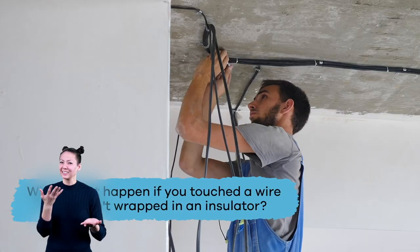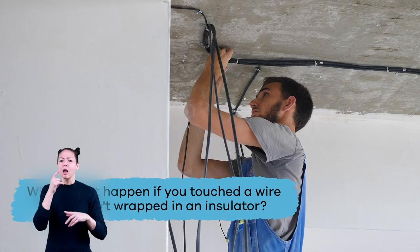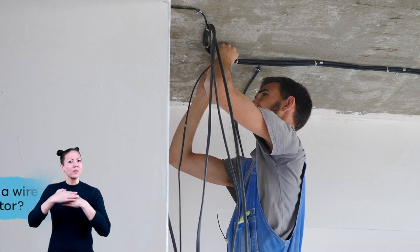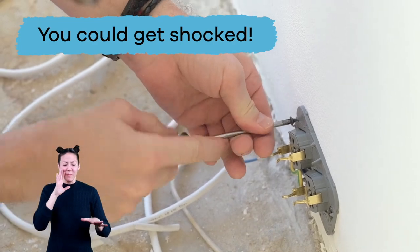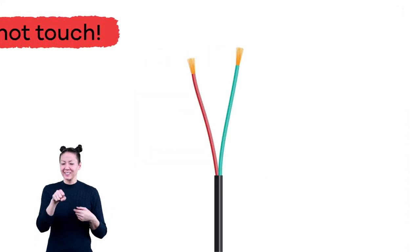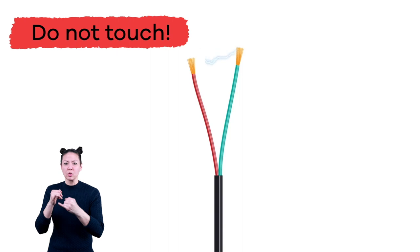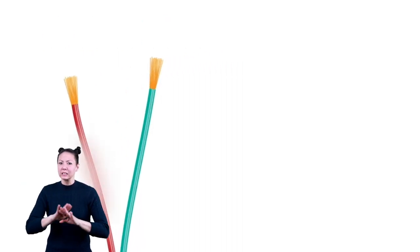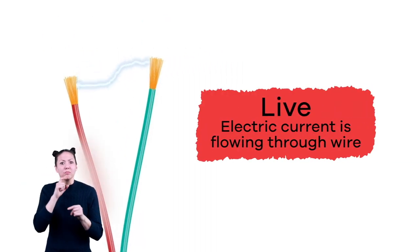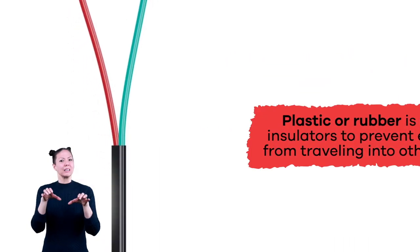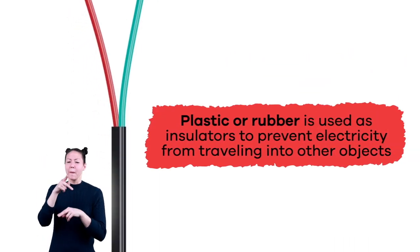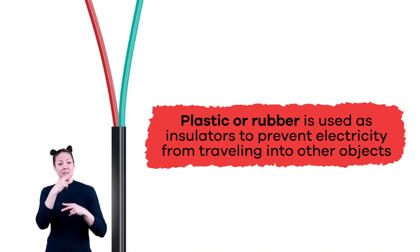What do you think might happen if you touched a wire that wasn't wrapped in an insulator? If you said you could get shocked, you're absolutely right. It's important to never touch any wires that you see. You never know if they are alive, which means that electric current is flowing through them. The plastic or rubber is used as insulators to prevent the electricity from traveling into other objects, like yourself.